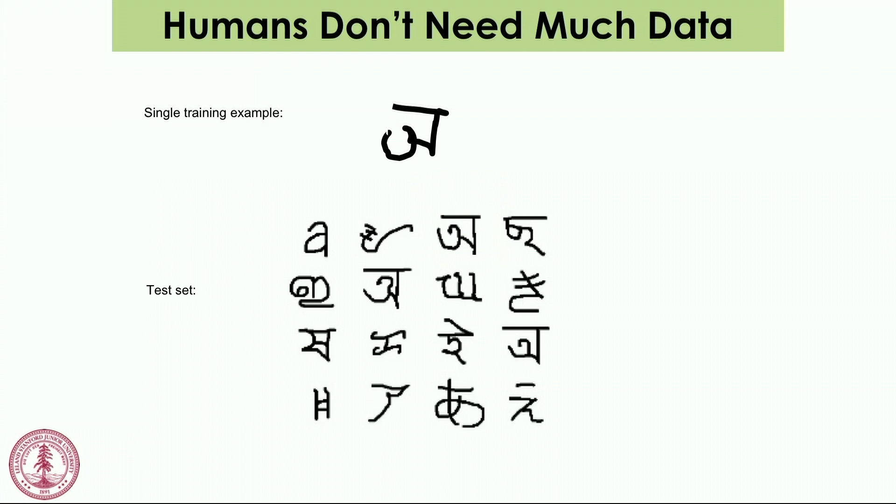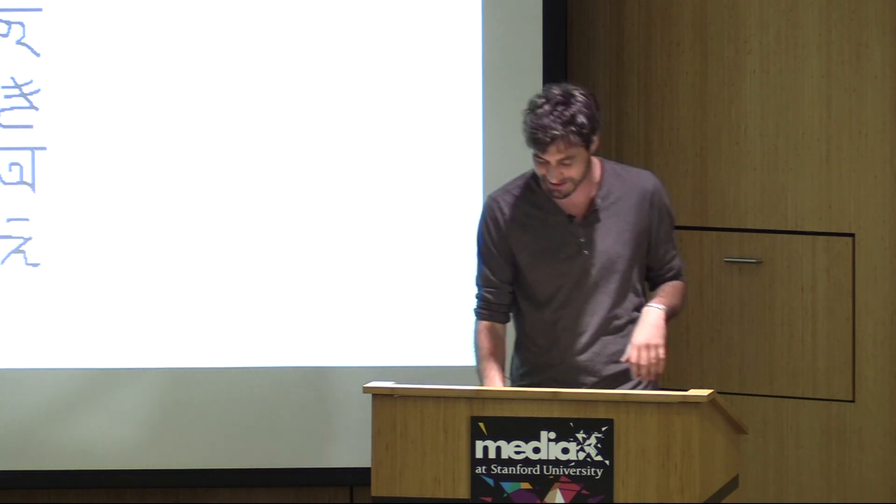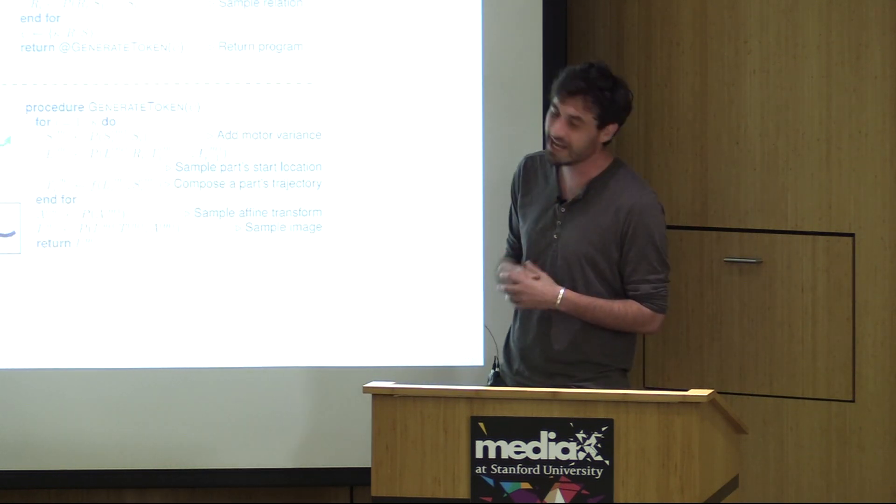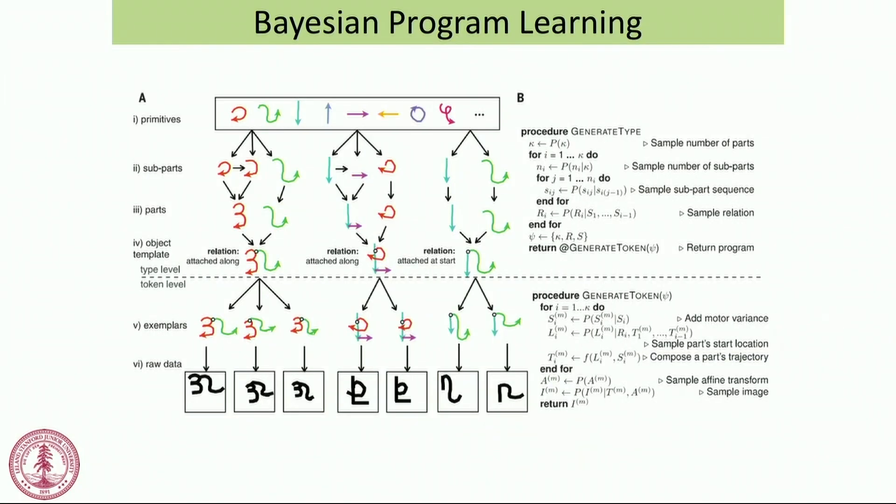Humans, on the other hand, we can do a lot of intelligence with one example. Let's just do this for fun. I want you guys to try and recognize which of these characters is the same as the one in your single training example. You guys can just yell out. Is this it? No. Is this it? No. Is this it? Okay. We can have our moment of bliss where we're like, we're still smarter than the machines.